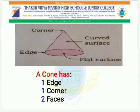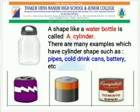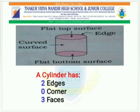Now, look at the water bottle. A shape like a water bottle is called a cylinder. There are many examples which have cylinder shapes, such as a pipe, cold drink cans, battery, etc. A cylinder has two edges, zero corners, and three faces.